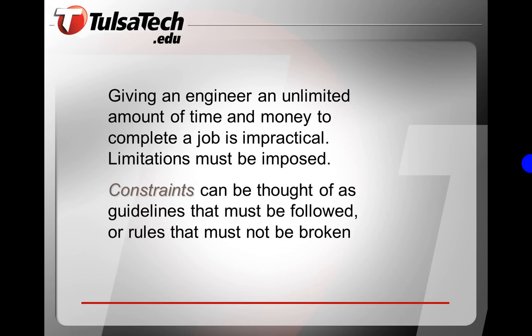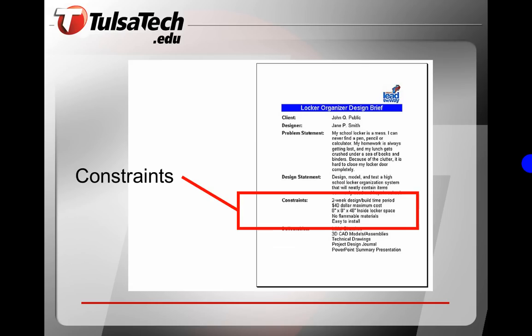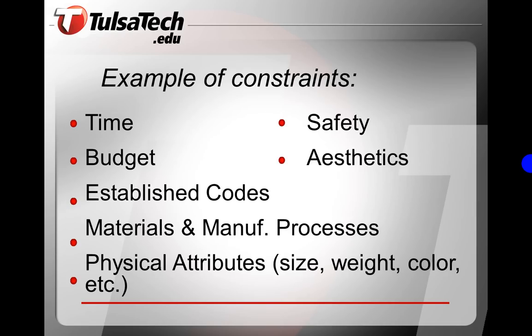Next is the constraints. Giving an engineer an unlimited amount of time and money to complete a job is impractical — limitations must be imposed. Constraints can be thought of as guidelines that must be followed or rules that must not be broken. In this situation, they are given two weeks to design and build, a maximum cost of $40.00, a size limit of 8 inches by 8 inches by 48 inches, they cannot use flammable materials, and it must be easy to install. Examples of constraints include time, budget, established codes, materials and manufacturing processes, physical attributes like size, weight, and color, safety, and aesthetics.